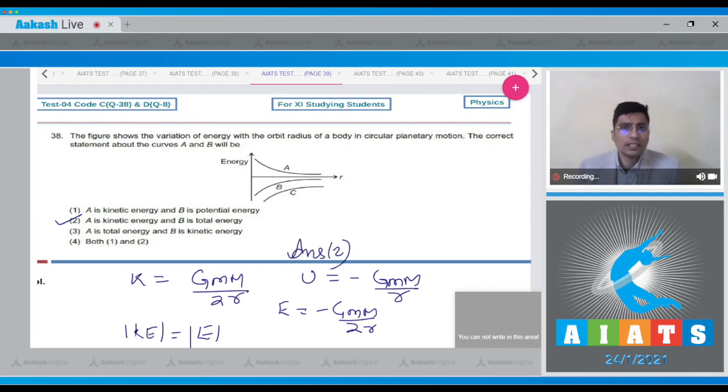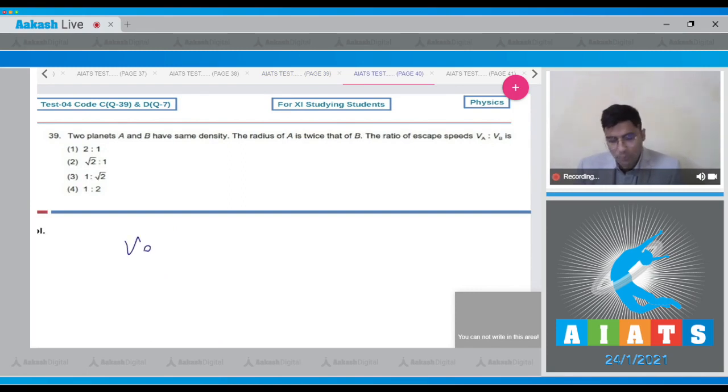Now moving on to question 39. The escape speed is given as under root of 2 gm by r, which can also be written in terms of density as 8 by 3 pi g rho r square.